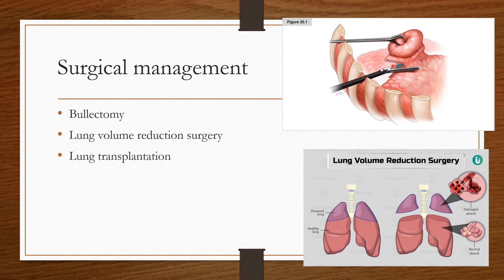Surgical management includes bullectomy. Next is lung volume reduction surgery, where the damaged alveolar spaces and degenerated parts of the lungs are removed. The lungs affected by destroyed alveolar ducts are addressed. Lung transplantation is a very rare procedure. This covers the surgical management.